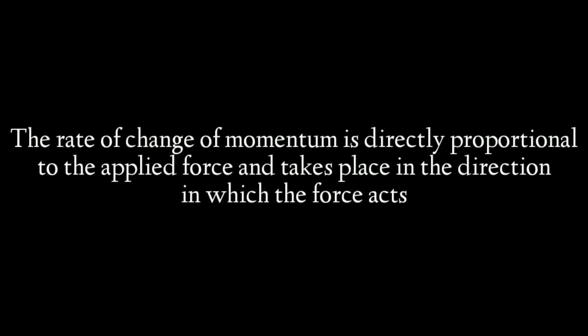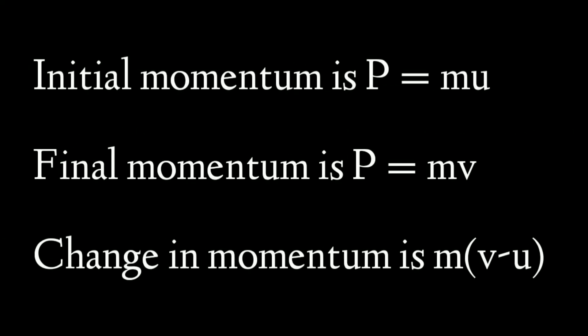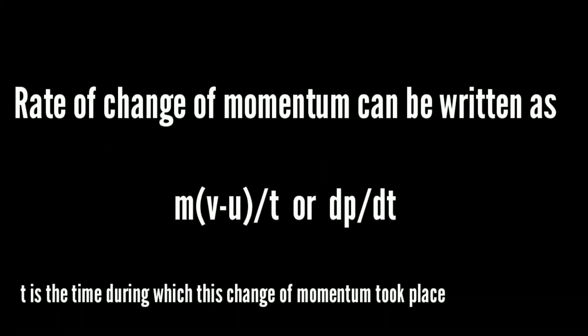So the second law of motion is stated as: the rate of change of momentum of a body is directly proportional to the applied force and takes place in the direction in which the force acts. If the initial momentum of the body is p = mu and the final momentum is p = mv, then the change in momentum is delta p = m(v − u). The rate of change of momentum can be written as m(v − u)/t, or dp/dt, if t is the time during which this change of momentum took place. So the second law gives us F is proportional to dp/dt.